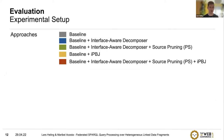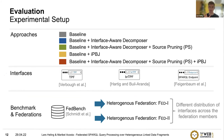We evaluate our approach starting with a baseline that does not consider interface expressivity. We then examine the impact of adding our interface-aware decomposer, our source pruning approach, and the new interface-aware polymorphic bind-join operator. We focused on federations with three types of interfaces: triple pattern fragment servers, binding-restricted triple pattern fragment servers, and SPARQL endpoints. We used the well-known FedBench benchmark to set up two heterogeneous federations that differ in the distribution of those three interfaces across data sources.